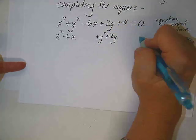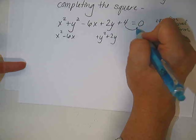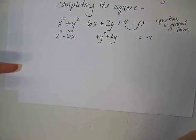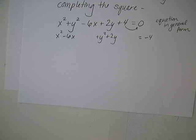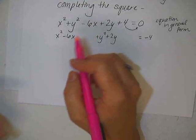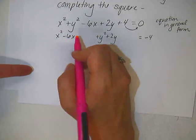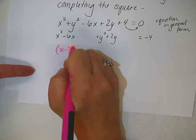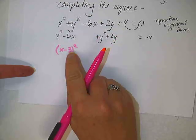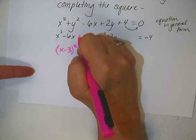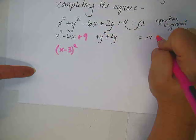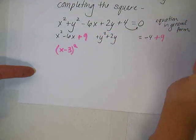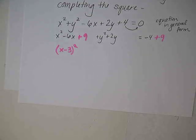Okay. So completing the square, the first thing you want to do is group the x's together, and then leave a space, and then group the y's together, and leave a space, and then move that 4 to the other side by making it a negative 4 on the opposite side. Okay. Why did I leave some spaces in there? So I can complete the square.